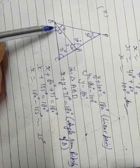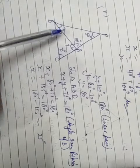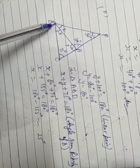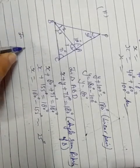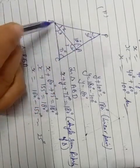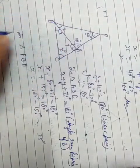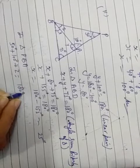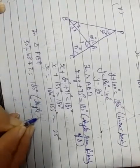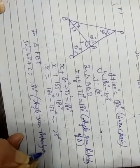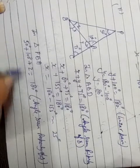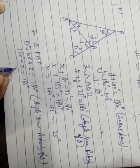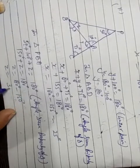Now find Z. We take triangle PBA. Using angle sum property of triangle: 50 degrees plus 100 degrees plus Z equals 180 degrees. So 150 plus Z equals 180, therefore Z equals 180 minus 150, giving Z equals 30 degrees.